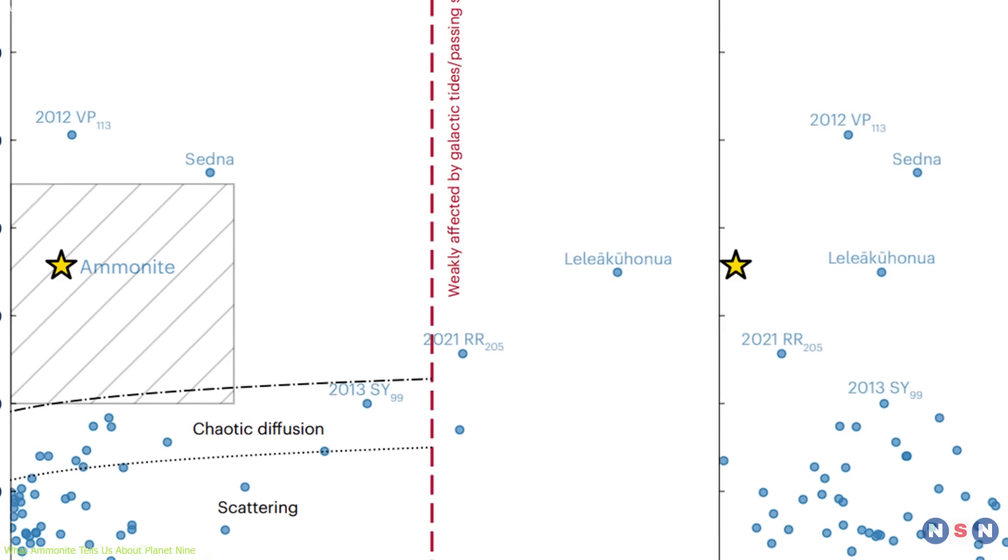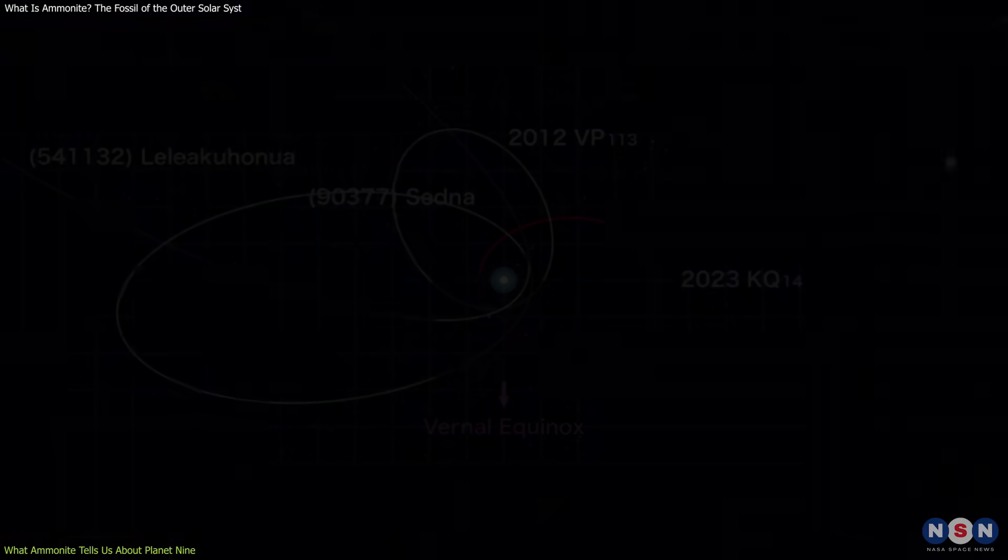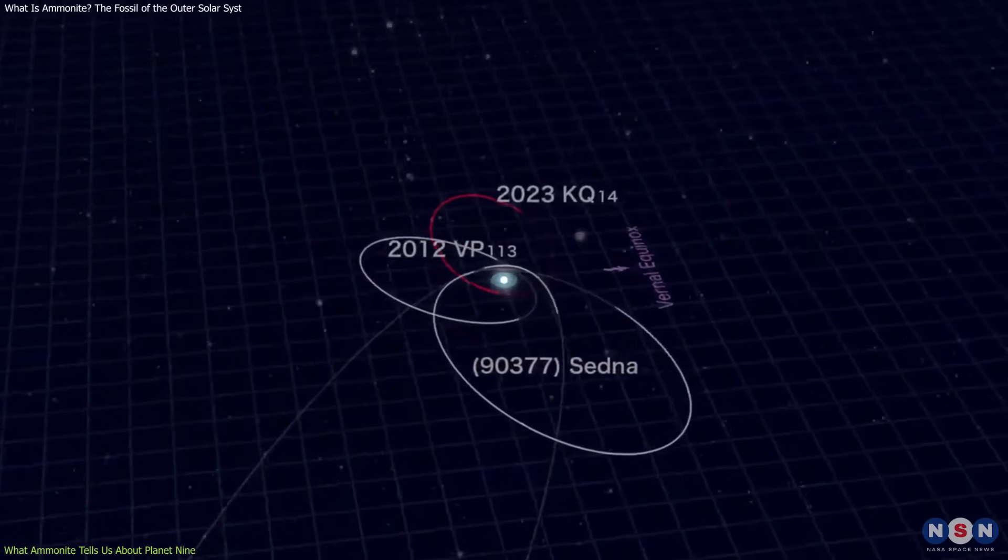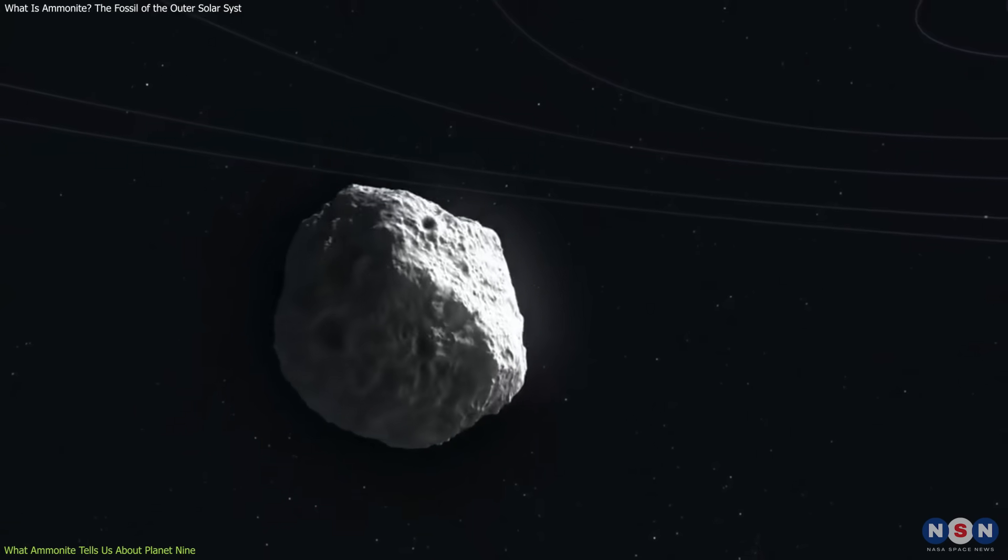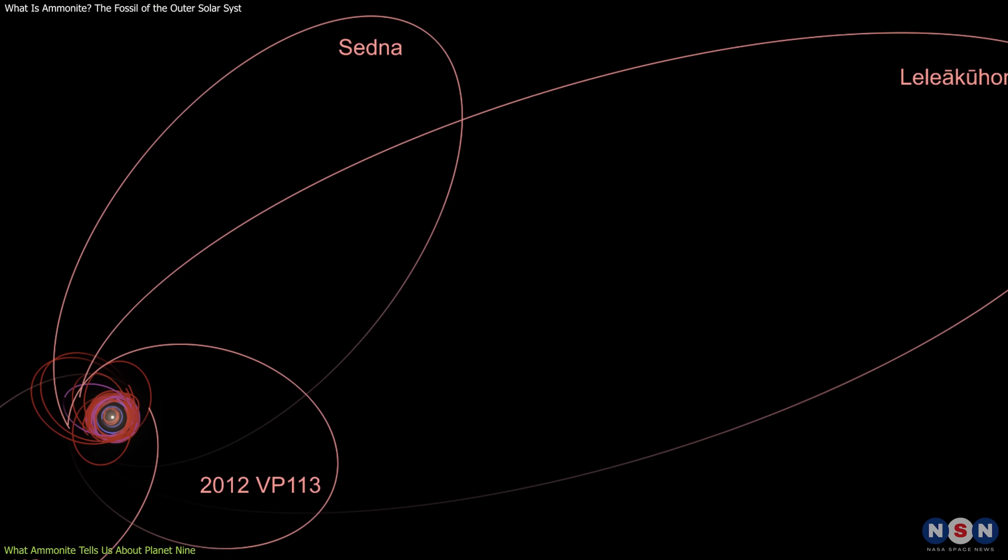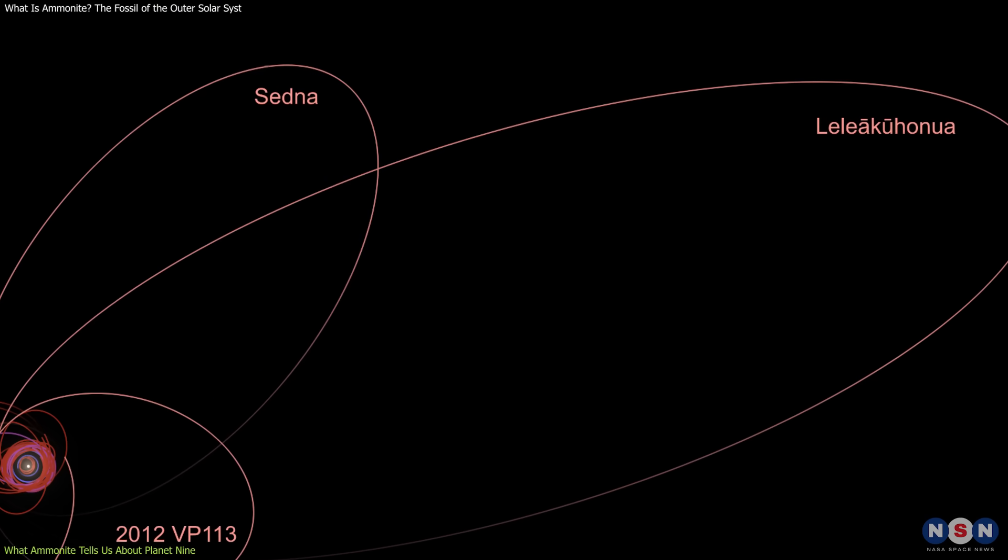To investigate further, Dr. Yukon Huang and colleagues at the National Astronomical Observatory of Japan modeled the object's orbital evolution. They found that its current trajectory has remained stable for billions of years, suggesting it hasn't been disturbed recently. More importantly, the orbit never matched that of the other sednoids, not even in the distant past.